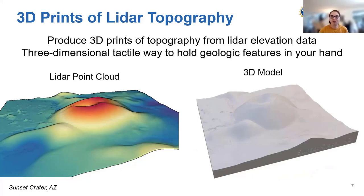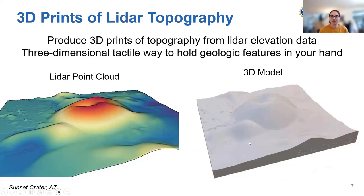This is an awesome three-dimensional tactile way to hold geologic features in your hand. You can see here a depiction of the LiDAR point cloud of Sunset Crater, a volcano up in Flagstaff, Arizona. Our LiDAR point cloud is a 3D representation of the topography and the land surface, so it essentially holds all the information needed to create a 3D print. This is a digital virtual representation of a 3D model, and in creating a 3D print, we need to fill in the structure and add a base.